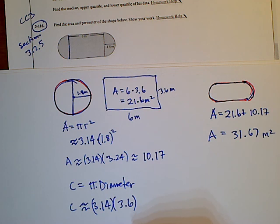So if I take pi times the diameter, I get approximately 11.304, three hundred and four thousandths. That's the circumference.